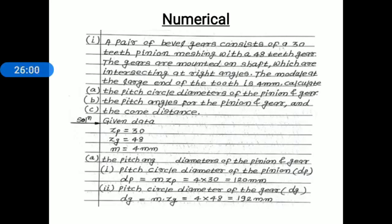Step A: pitch circle diameters. Pitch circle diameter of pinion: D_p = m × zp = 4 × 30 = 120 mm. Pitch circle diameter of gear: D_g = m × zg = 4 × 48 = 192 mm. Note: capital letters are used to denote pitch circle diameters of bevel gears.